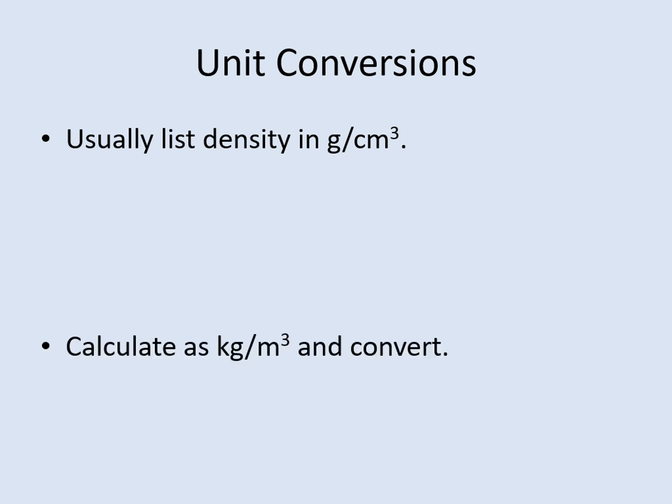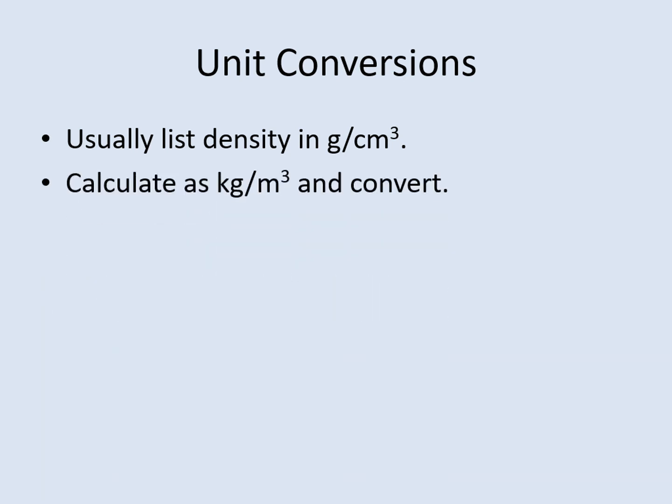We're going to do something a little different with the unit conversion this time. Generally, we list density in units of grams per centimeter cubed. Normally, that would mean turning the mass of the planet into grams and the radius into centimeters. However, that would involve taking several steps in doing the conversion. So instead, we're going to convert the mass and radius into kilograms and meters, which we've already done before, so we know how to do. This will give us a density in kilograms per meter cubed instead. At the end of the calculation, we'll do one more conversion to turn the density into grams per cubic centimeter.